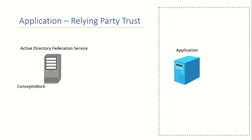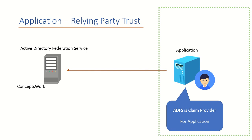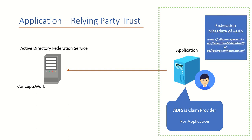To understand what a relying party trust is, assume there is an application that has to contact the ADFS server of ConceptsWork so that users from ConceptsWork can log into this application. The application has to send the authentication request to the ADFS server, because ADFS is acting as a claim provider for the application — meaning the application is expecting a token from ADFS. This is only possible when your application knows which endpoint the request has to be routed to, which it knows because you have provided the federation metadata of your ADFS.